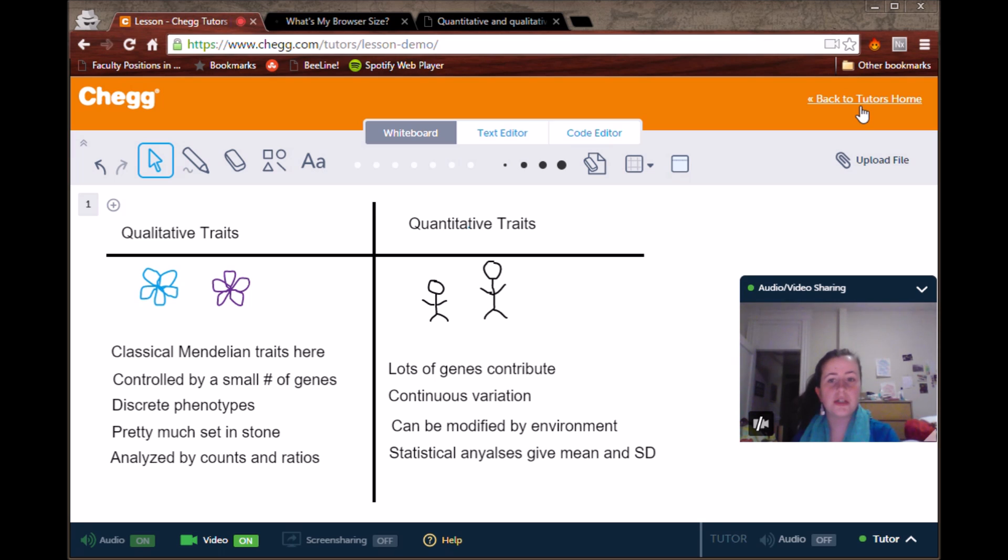A good example of a qualitative trait is flower color. Is the flower blue or is it purple or red or green, pink? The point being that there are just yes or no categories.